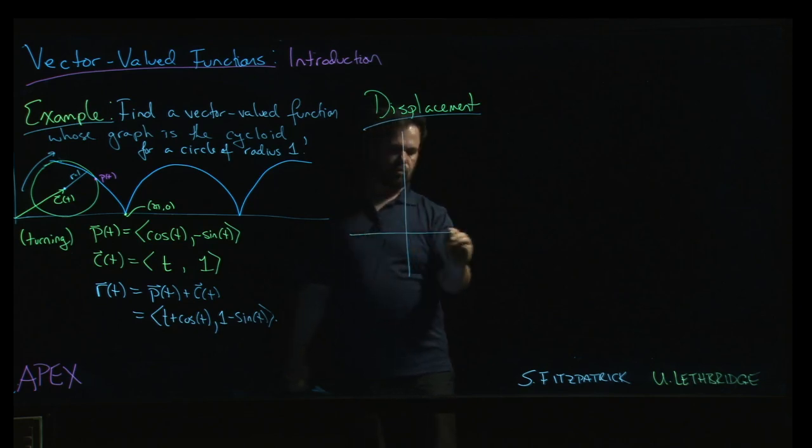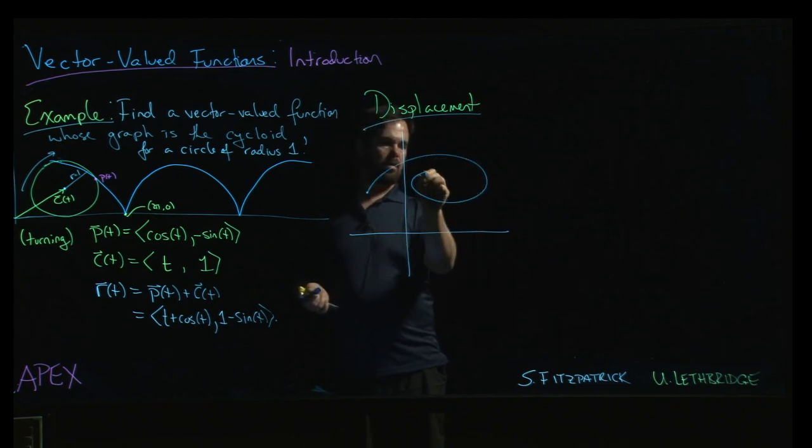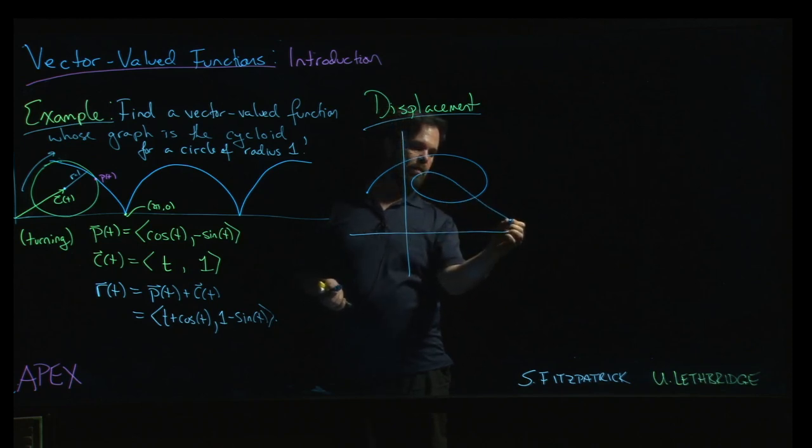So the scenario, and we'll draw this in the plane, is imagine that you've got some vector-valued function and you've graphed it. And so let's say the graph does something like this. It goes around, maybe it passes through itself, ends up over there.